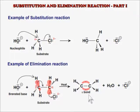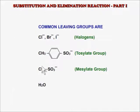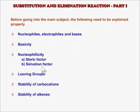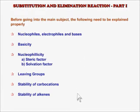This is called an elimination reaction, or beta elimination reaction. There are also leaving groups other than halogens. In order to get a good understanding of substitution and elimination reactions in organic chemistry, we should first learn some important things before going into the subject.